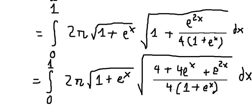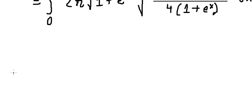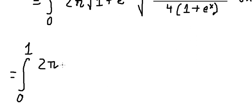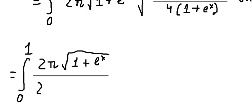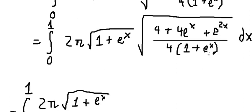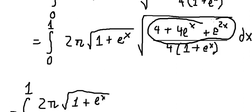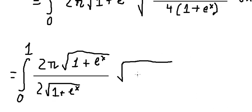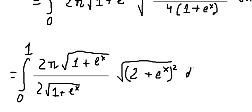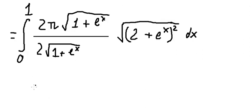We take the square root of 4 times (1 plus e to the power of x) and factor it outside. Using trigonometric or algebraic identities, we simplify the expression further.